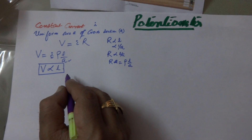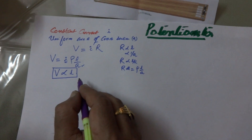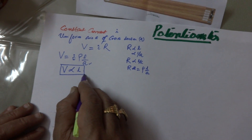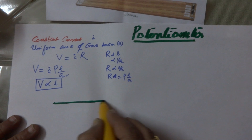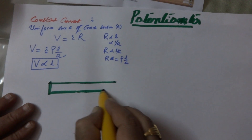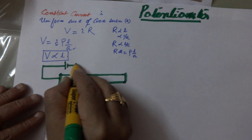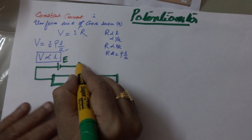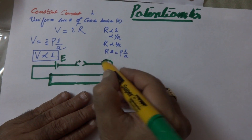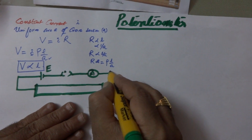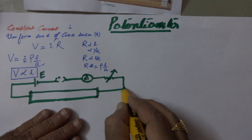Remember, the principle of potentiometer is that the potential difference is directly proportional to L when constant current is passing through it and if the wire is of uniform area of cross section. So V is directly proportional to L is the principle of potentiometer. To compare the EMF of two cells, we must have one auxiliary cell whose EMF is E, one key, and one milliammeter or ammeter to verify that constant current is passing through. If the value of current changes, with the help of a variable resistance you can make it constant — that is the use of the rheostat. This circuit is called the auxiliary circuit.